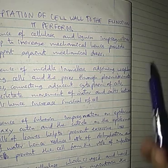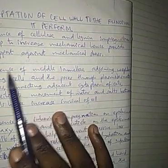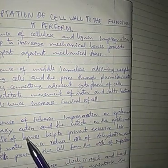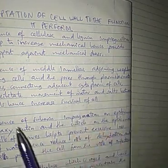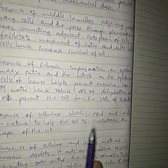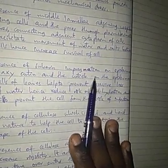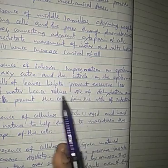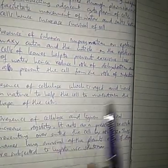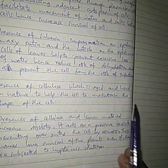Adaptations of the cell wall: First, the presence of cellulose and lignin impregnation increases mechanical support. Second, the presence of middle lamella at the joint between two cells and plasmodesmata which connect two cells allows movement of water and salts between cells. Third, presence of suberin impregnation in epidermal cells prevents excessive water loss and dehydration by transpiration. Fourth, presence of cellulose — which is rigid and hard — helps the cell maintain its shape.